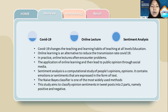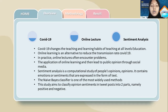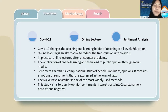Sentiment analysis is a computational study of people's opinions. It contains emotion or sentiment that is expressed in the form of text. Sentiment analysis groups the polarity of text into sentences that are positive, negative, and neutral. The Naive Bayes classifier is one of the most widely used methods based on the probability P, attribute X, and each class. It is based on strong independent assumptions.